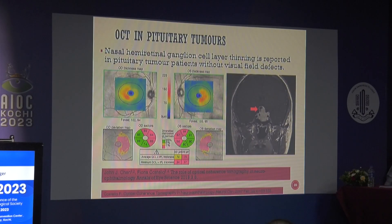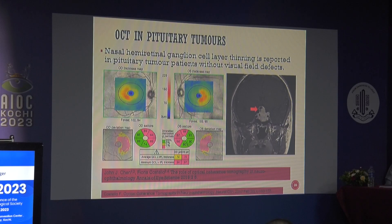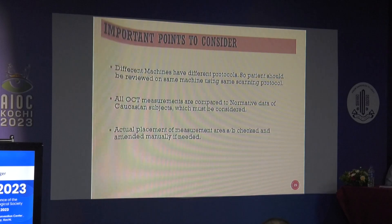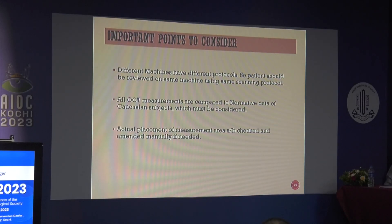A recent publication by John Chen et al. assessed OCT in pituitary tumor patients and observed nasal hemi-retinal ganglion cell thinning corresponding to the visual field defects. This is an important finding: if a pituitary tumor patient comes to you, we must do perimetry, but OCT can show the defect even before perimetry detects it, making it an important tool in such patients.